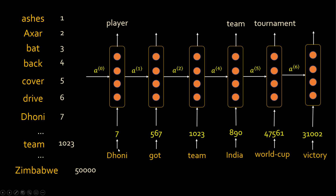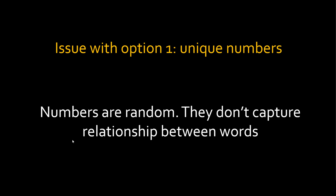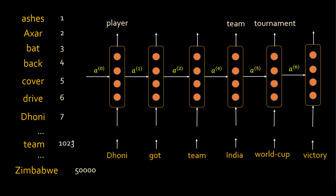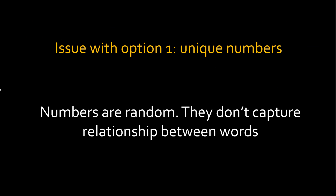For example, Dhoni has number seven, so you pass seven as input. That's option number one: converting words into unique numbers based on your vocabulary. But there are issues — the numbers are random and don't capture the relationship between two words. For example, Dhoni's number is seven and Aksar's number is two. Dhoni and Aksar are both players, so maybe their numbers should be similar, but they are far apart. So random numbering cannot capture similarities between words.